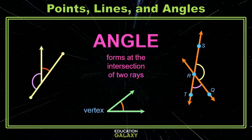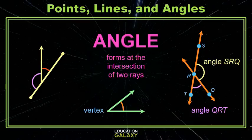But the arms of the angles — the rays of the angles — have different points. You see angle SRQ and angle QRT.